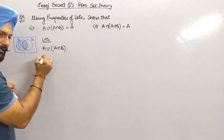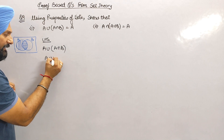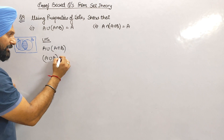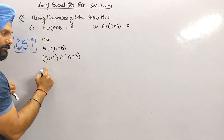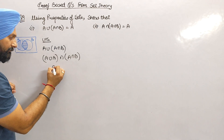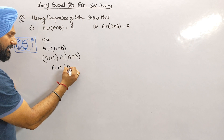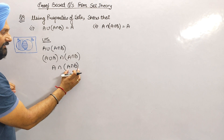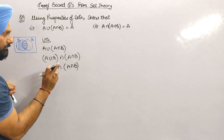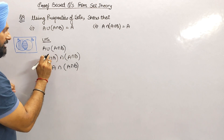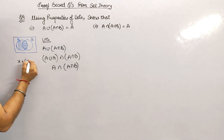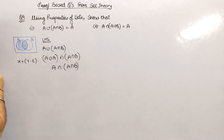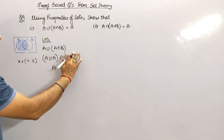What is A union A intersection B? A intersection B — what is A union A intersection B? Oh sorry, union. Thank you.